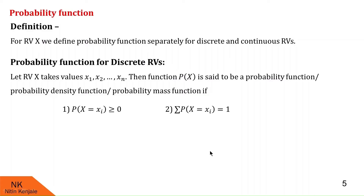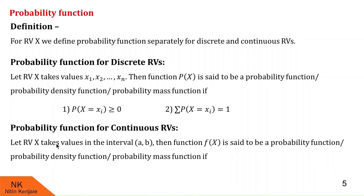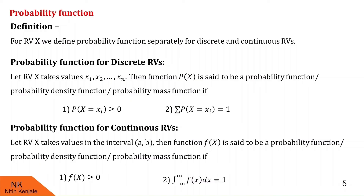Now let us see the probability function for a continuous random variable. Let X be a continuous random variable taking values in the interval (a, b). Then the function f(x) is said to be a probability density function if it satisfies two conditions: first, f(x) ≥ 0; and second, the integral of f(x) dx over the limits minus infinity to infinity equals 1. If f(x) satisfies these two conditions, we call f(x) the probability function of a continuous random variable.